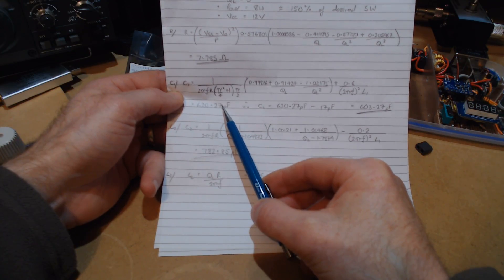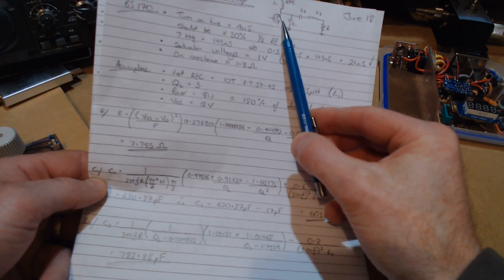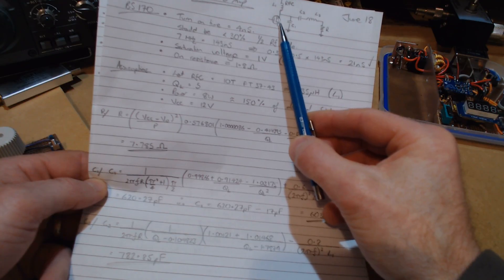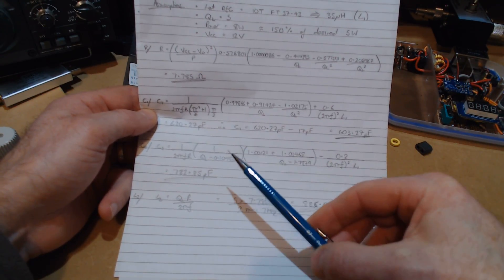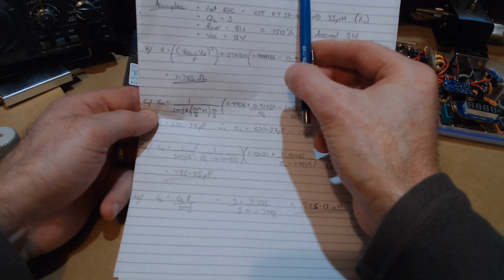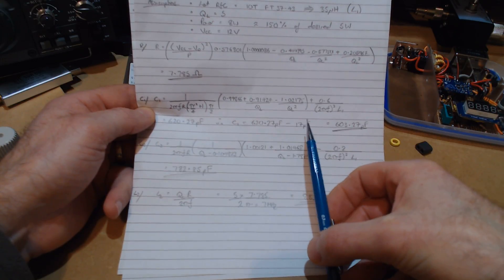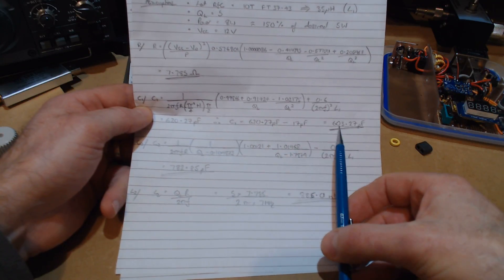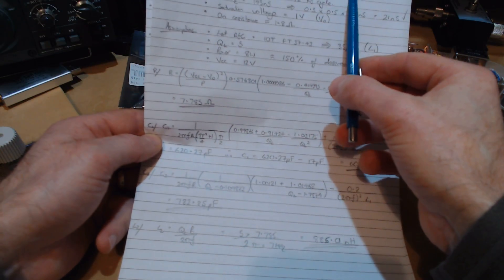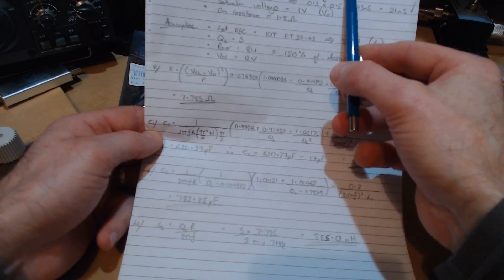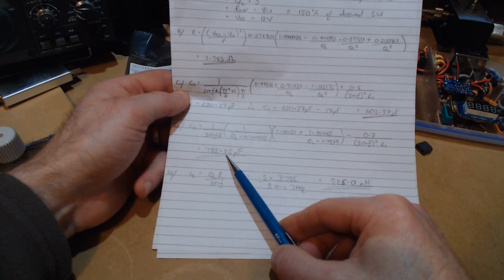It does say elsewhere that you do need to take into consideration the output capacitance of your device. So I'm going to assume that to be around 17 picofarads. I do note I'm going to have a number of devices in parallel, so probably by rights that should be increased. But for now I'm just going to stick with 17 picofarads and see how we go. So 620 minus 17 gives us roughly 603 picofarads. For C2, that's the series resonant capacitor. Plugging in the values gives us a value of 782 picofarads.